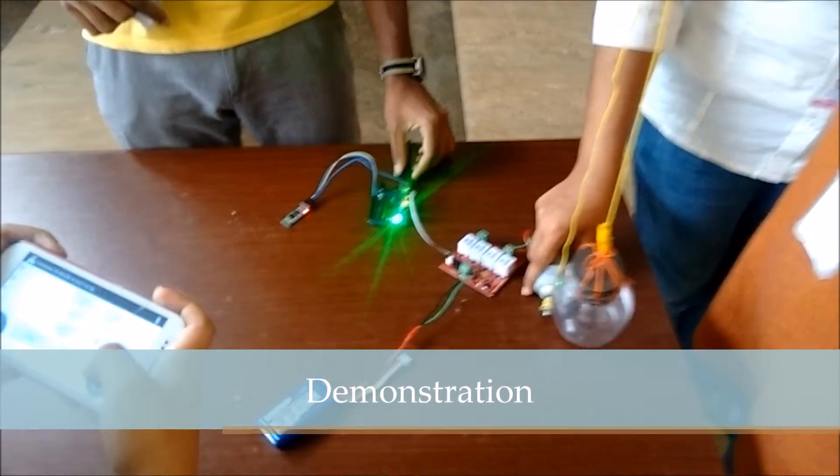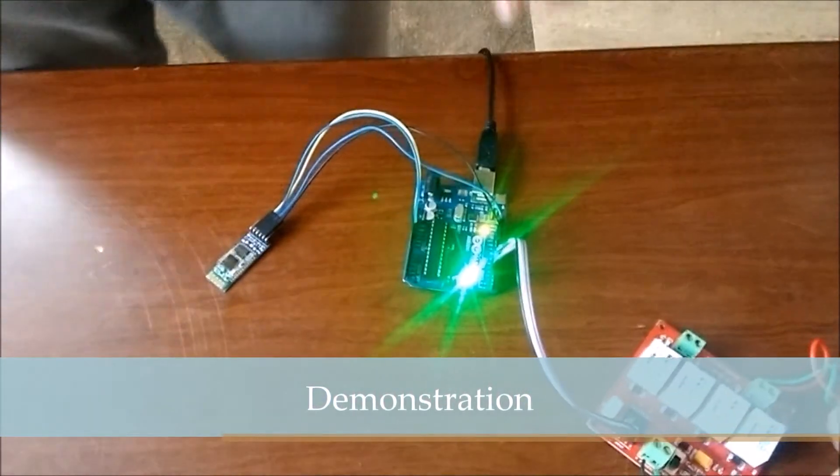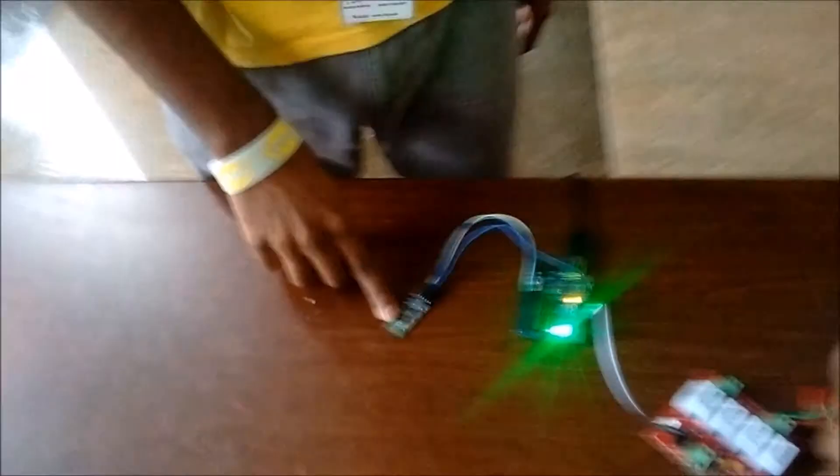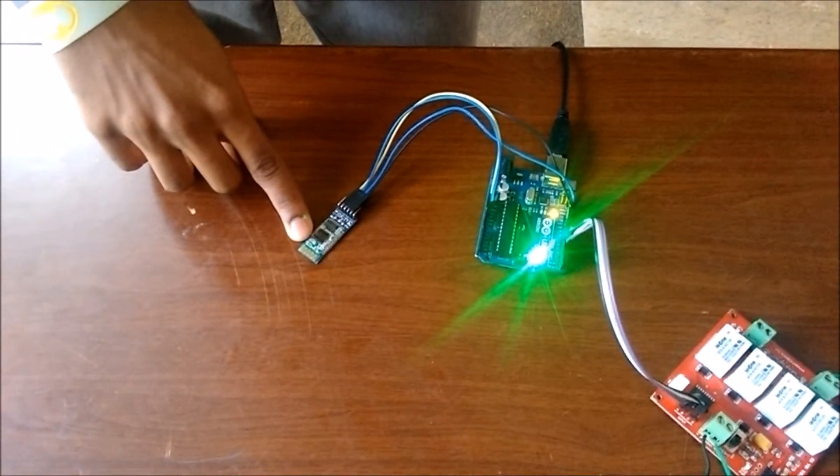Now let's see the demonstration. I am taking the power source from my PC which is 5 volt over here, and then this Bluetooth is already paired with my mobile phone smartphone. Now probably it should receive commands from my mobile phone.